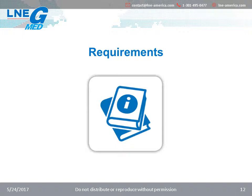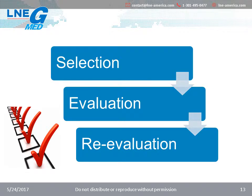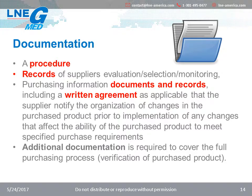Now let's talk more in detail about the supplier control requirements. As previously identified in the 2003 revision of the standard, the organization shall control the selection and evaluation of its suppliers, but also its re-evaluation. This remains applicable with the 2016 revision, in which requirements are now more specific. This means supplier control begins even before making the choice of using one, and continues until the organization stops using the supplier. Let's have a closer look at three main requirements: the documentation, the supplier control criteria, and the risk-based approach.